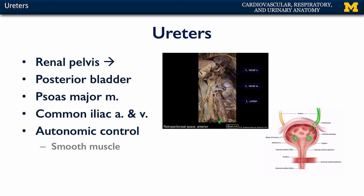And so, there isn't an anatomical valve that prevents the back flow of urine from the bladder into the ureter, but there is a physiological valve, and that is when the bladder expands